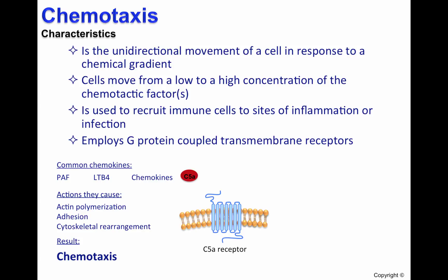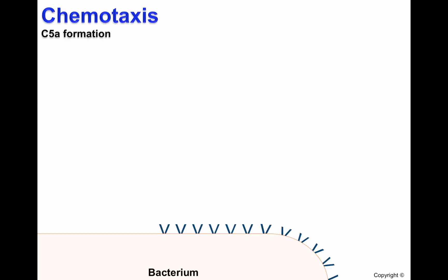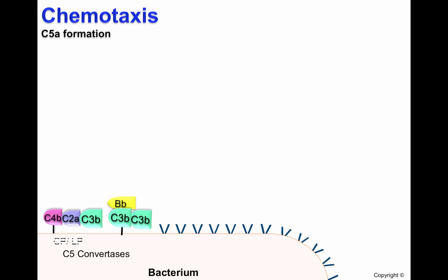Today we will focus on C5A. As has been shown in previous videos, C5A is formed when C5 convertases from the classical and lectin pathway — C4B, C2A, C3B — or from the alternative pathway — C3B,